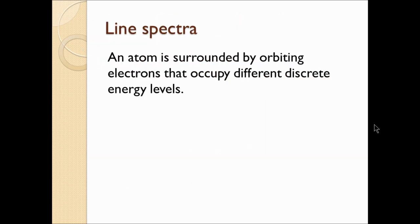So, what is line spectra? Well, firstly, an atom is surrounded by orbiting electrons and these electrons can occupy different discrete energy levels. We can show this on a simplified energy level diagram where E1 is the energy at level 1 and E2 is the energy at level 2.